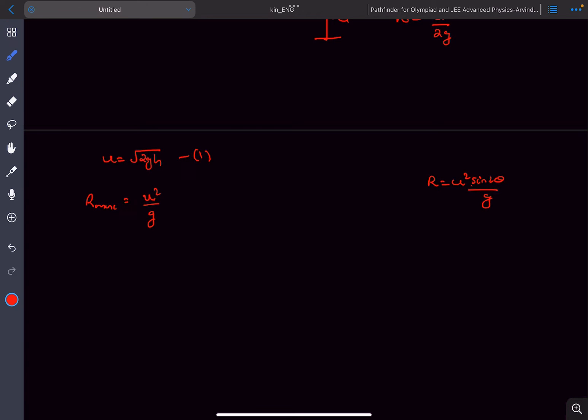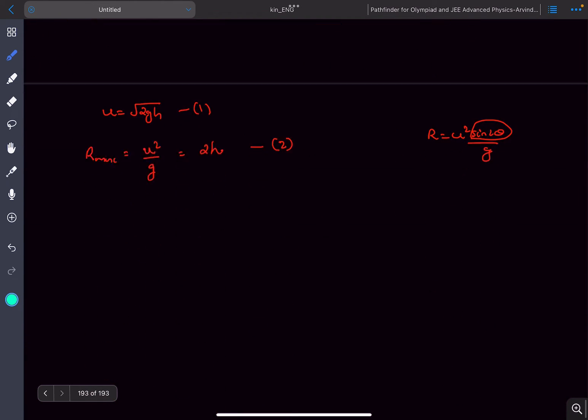When sin(2θ) becomes 1, or when θ is 45 degrees, the range of a ground-to-ground projectile is maximum and its magnitude is u²/g. This value, as you can see, is equal to 2h.